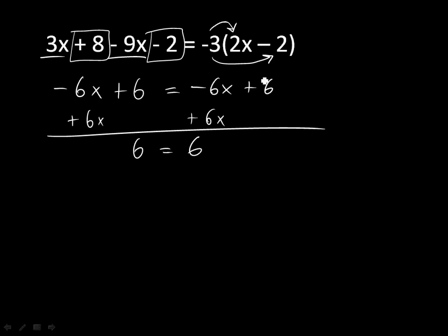So, similar to the last problem, when your variable is gone, I suggest you go back and check your work. Did I combine like terms correctly? Did I get my signs right? Did I distribute correctly? Did I get my signs right? Check these things over. Did you do the right operations? Did you add correctly? Looks like I did, so 6 is equal to 6.